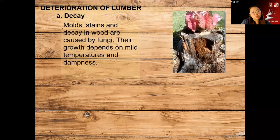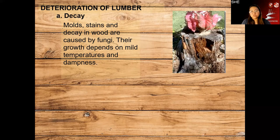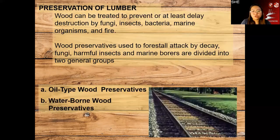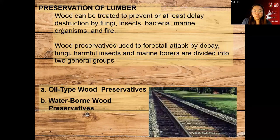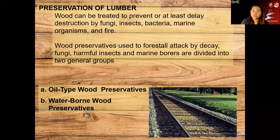There are different types of deterioration in lumber, similar to what was mentioned earlier with wood and decay. Usually molds and stains are caused by fungi. Wood can be treated to prevent or at least delay the destruction caused by fungi, insects, bacteria, marine organisms, and fire.